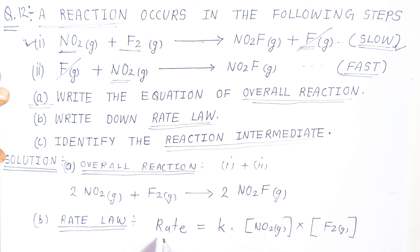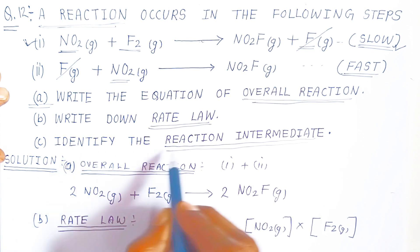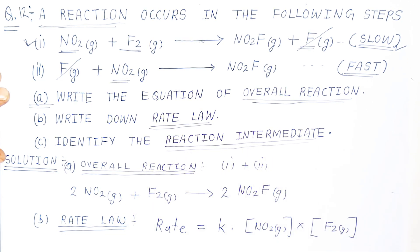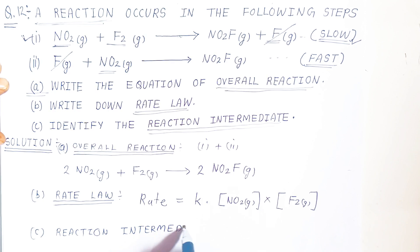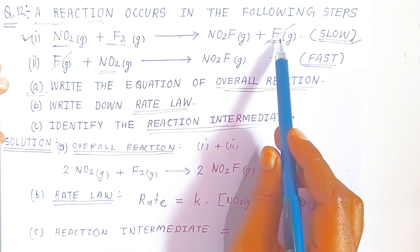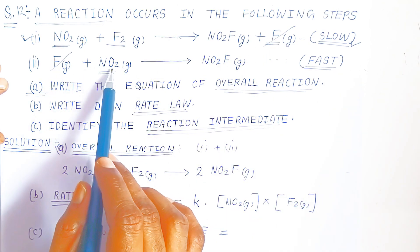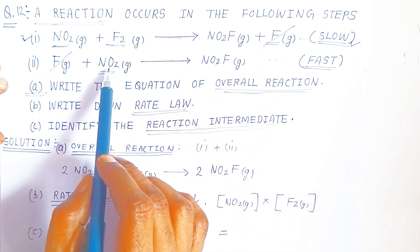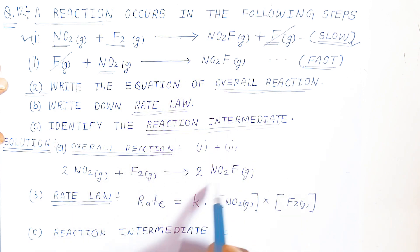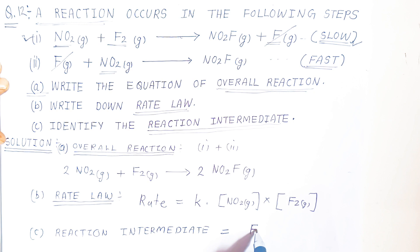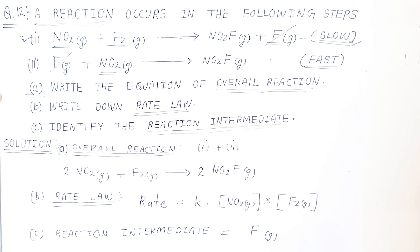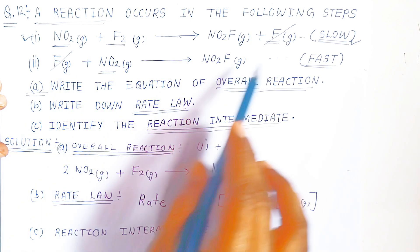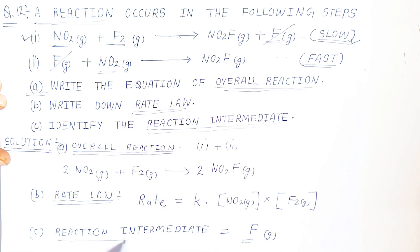For the third question, identify the reaction intermediate. Fluorine (F) appears as a product in the first step and is consumed by nitrogen dioxide in the second step. It does not appear in the overall reaction, so fluorine gas — or fluoride gas — is the reaction intermediate. A species that appears and then disappears in the mechanism is called the reaction intermediate.